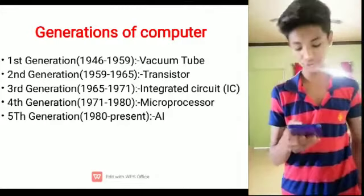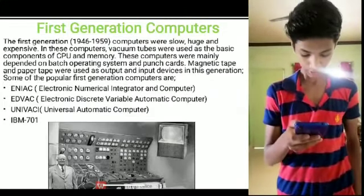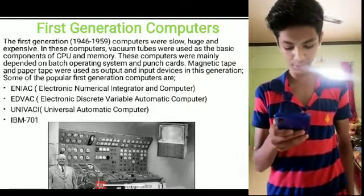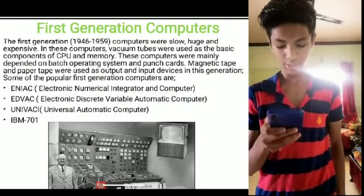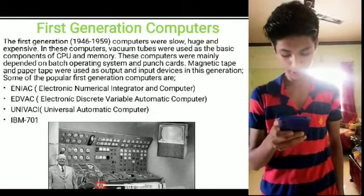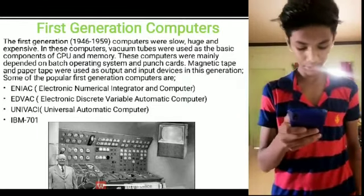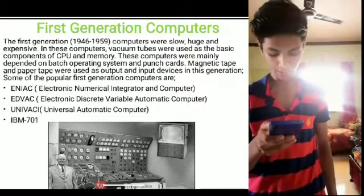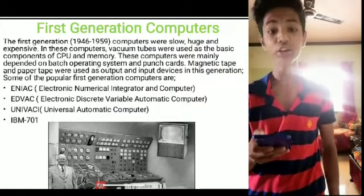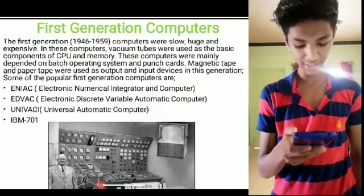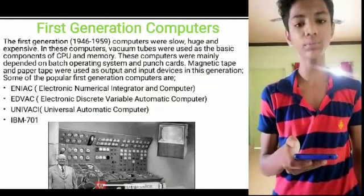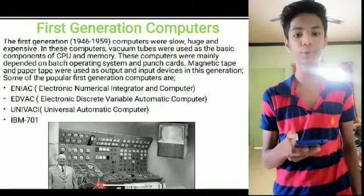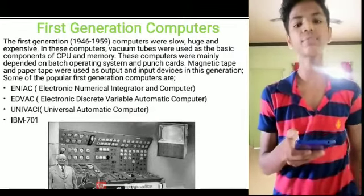First Generation Computers (1946–1959): The first generation computers were slow, huge, and expensive. Vacuum tubes were used as the basic components for the CPU and memory. These computers mainly depended on batch operating systems and punch cards. Magnetic tape was also used. Some popular first generation computers are: ENIAC (Electronic Numerical Integrator and Computer), EDVAC (Electronic Discrete Variable Automatic Computer), UNIVAC I (Universal Automatic Computer), and IBM 701.